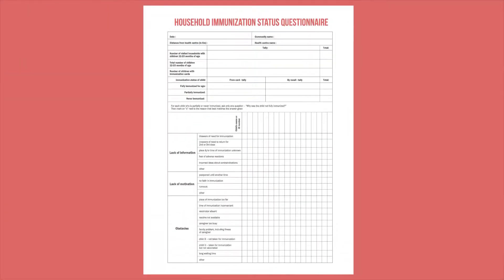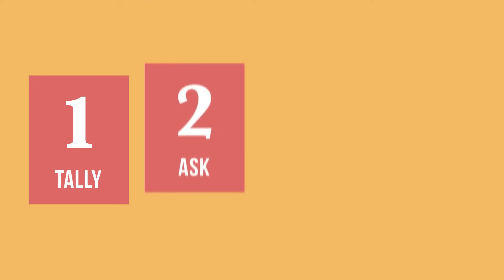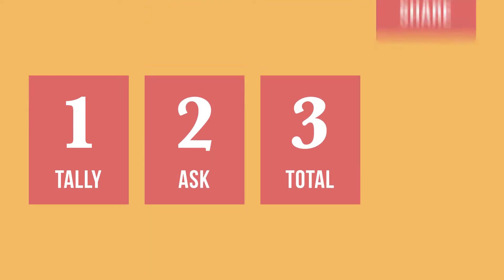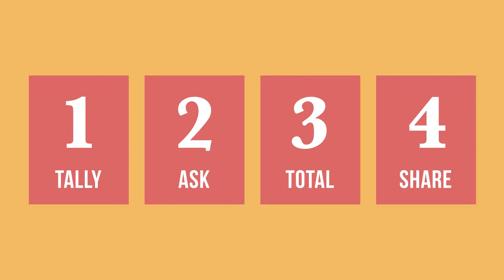The main tool for conducting household surveys is the household immunization status questionnaire. We will look at the main steps for completing a questionnaire: tallying the responses, asking questions to identify problems, totaling the results, and sharing the information.